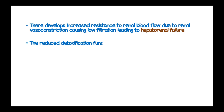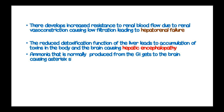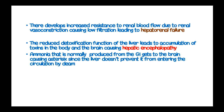The reduced detoxification function of the liver leads to accumulation of toxins in the body and brain, causing hepatic encephalopathy, which may be clinically evident by coma. Ammonia, normally produced in the gastrointestinal tract, reaches the brain causing asterixis, since the liver fails to prevent it from entering the circulation through its function of deamination.